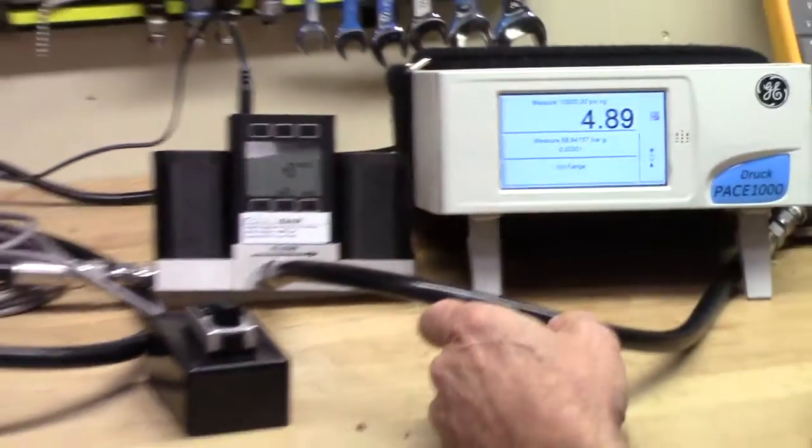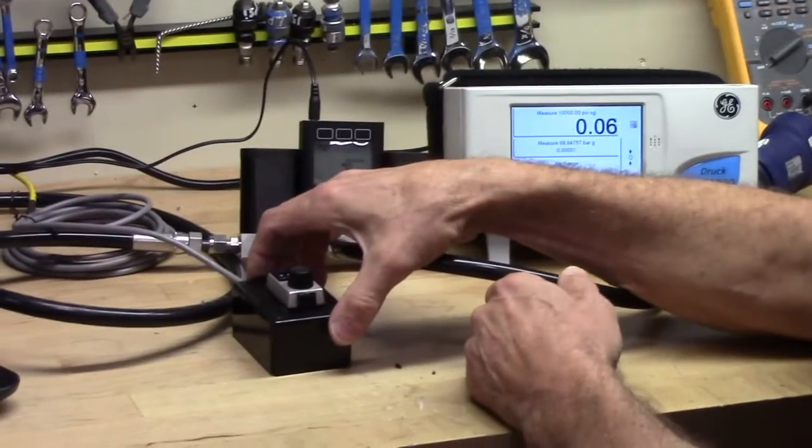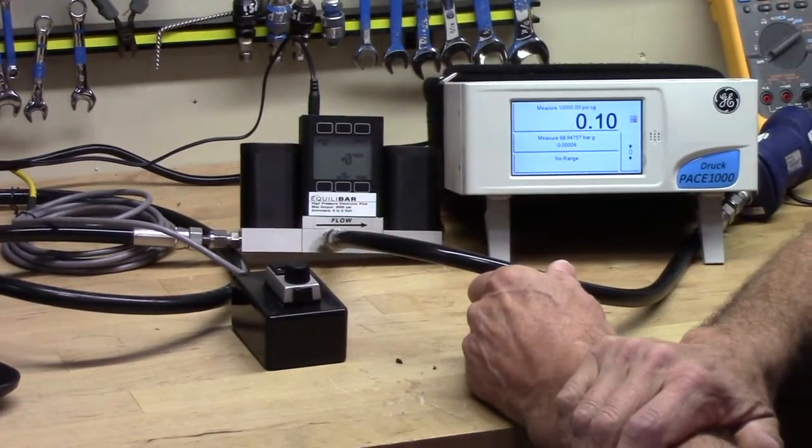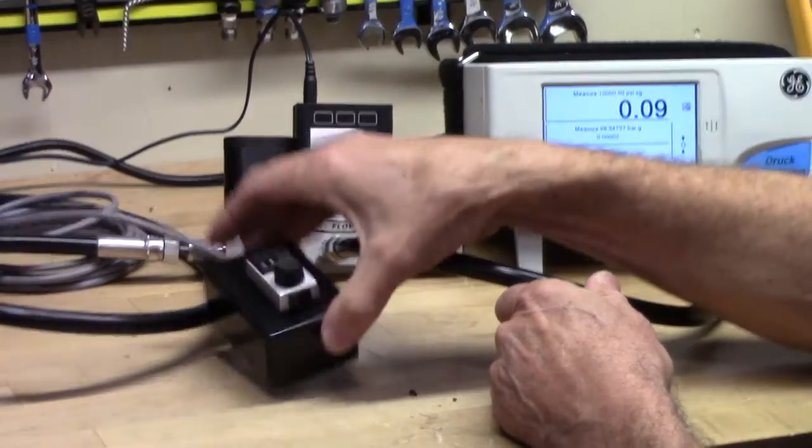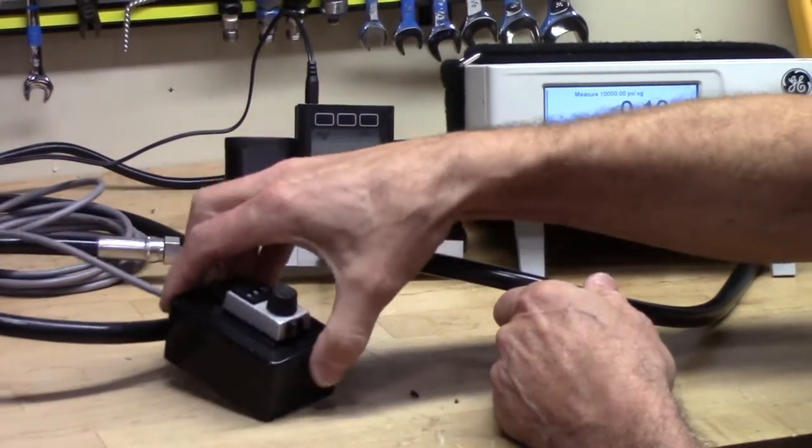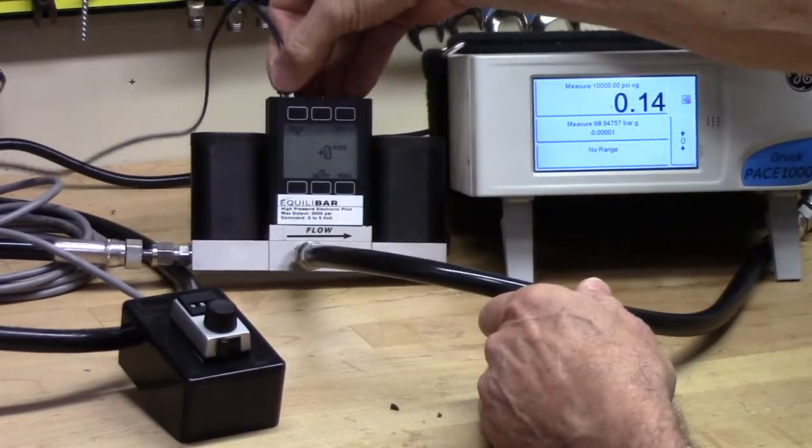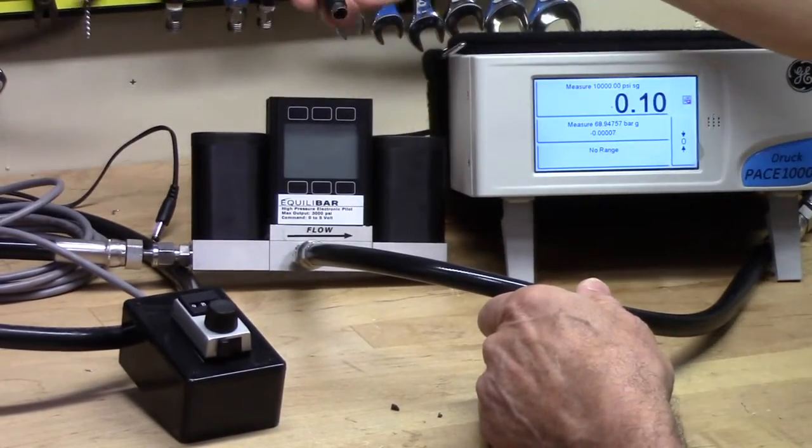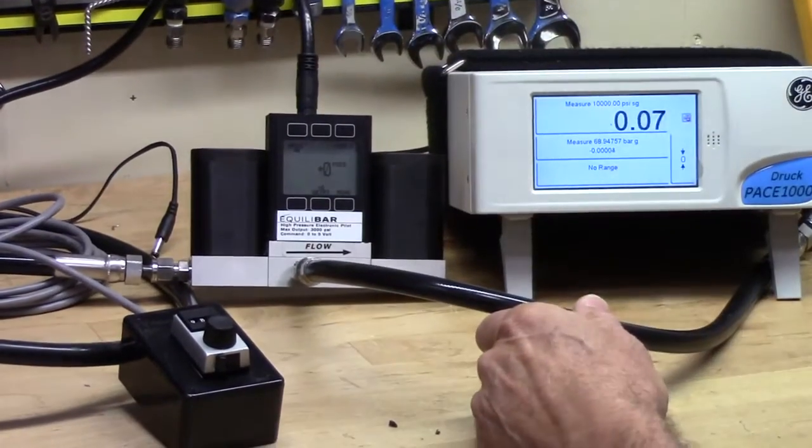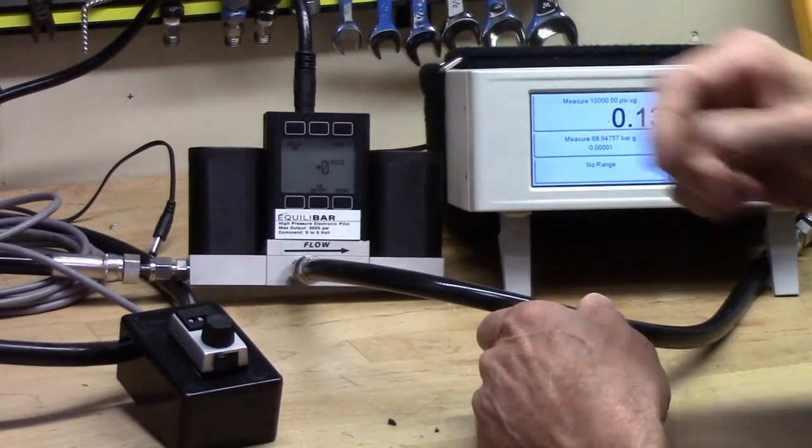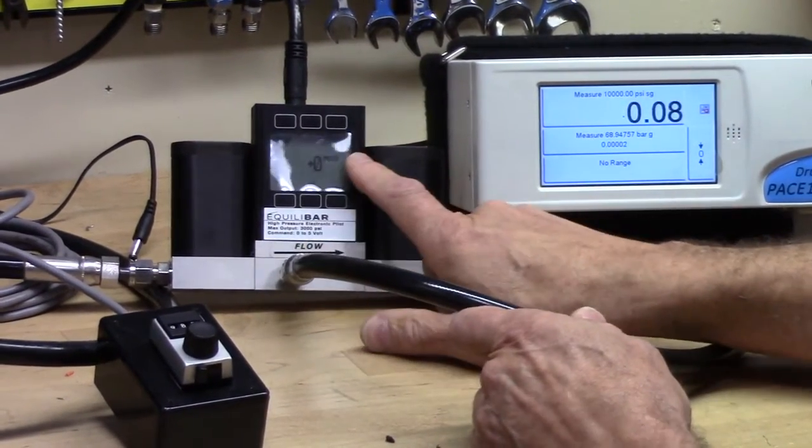The second method for controlling the set point of EPR 3000 is through the analog signal zero to five volts DC through pin four of the mini DIN connector. To simulate actual environment we're going to be using this potentiometer that we can vary from zero to five volts. It is supplied through pin four of the mini DIN connector and in this case the power is also supplied through the mini DIN connector. Now we need to change the set point source from front panel to analog.